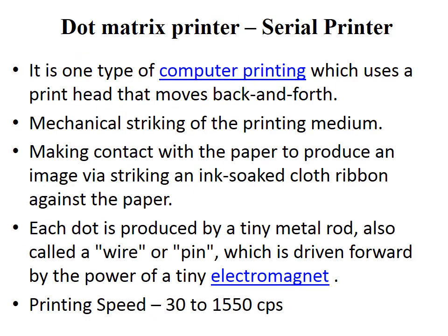The dot matrix printer is also called a serial printer, which can print a letter or a character at a time only. It is a type of computer printing which uses a printer head that moves back and forth or up and down across the printing area so that the letter or character can be printed on paper. The basic concept behind the printing is the mechanical striking of the printing medium.